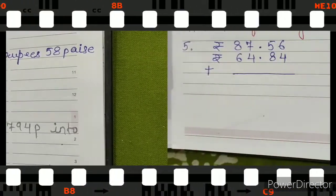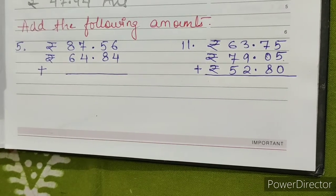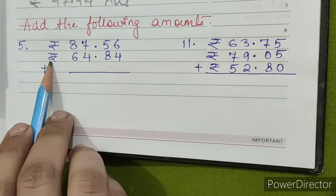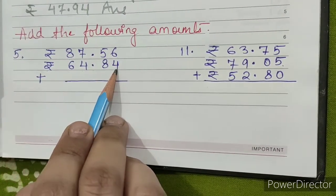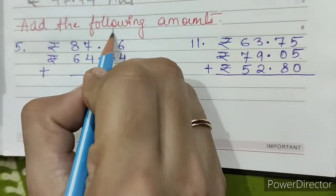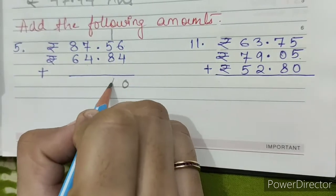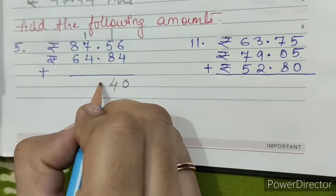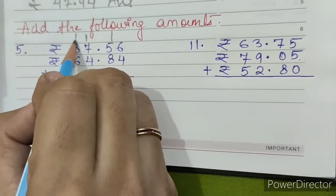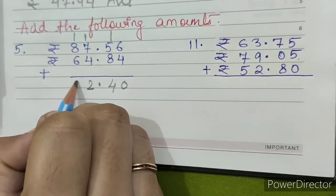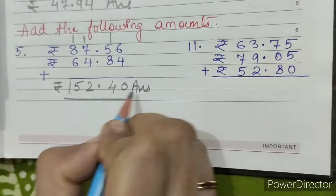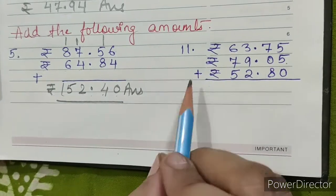Add the following amounts. Question number five: rupees 87.56 and rupees 64.84. Now we have to add this. 6 plus 4 equals 10, write 0 carry 1. 6 plus 8 equals 14, write 4 carry 1. 8 plus 4 equals 12, write 2 carry 1. 9 plus 6 equals 15. This is our answer: 152.40.